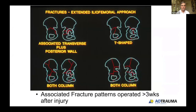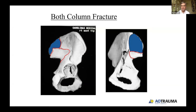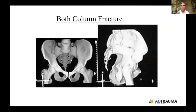The extended iliofemoral approach is reserved for specific both column fractures, occasional T-shaped fractures, and mostly for associated fracture patterns greater than three weeks old where you need to see within the joint for the final reduction. The specific both column fracture better addressed through an extended iliofemoral is one involving the SI joint as a fracture-dislocation, where the only intact portion is a small area — the sacrum completely blocks the view from inside the pelvis, so these are sometimes better operated from outside the pelvis in young patients.